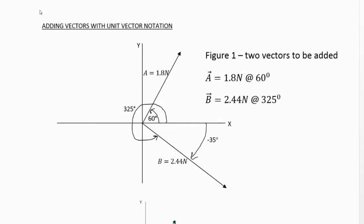We're going to show you an example of adding vectors with unit vector notation. So here I've got two force vectors, 1.8 newtons directed at 60 degrees and 2.44 newtons of force directed at 325 degrees. Remember, we use the x-axis, the positive x-axis as 0 degrees and we measure our angles counter-clockwise from that axis.